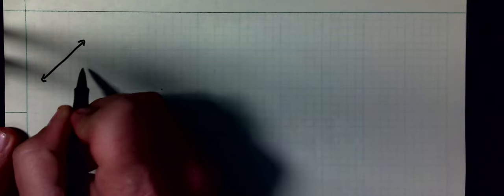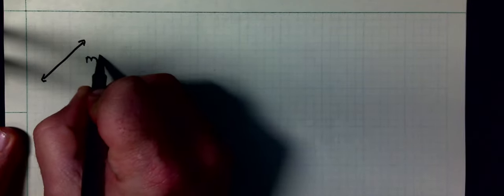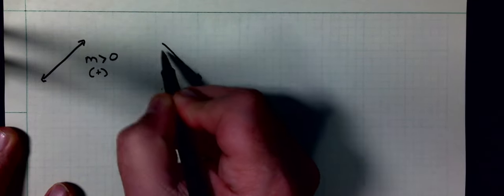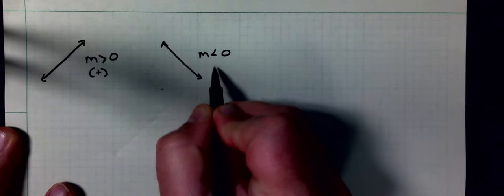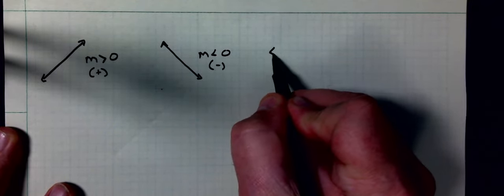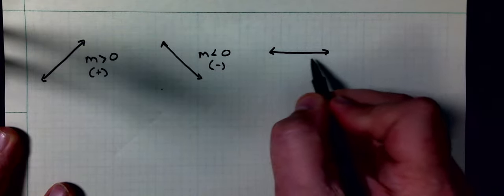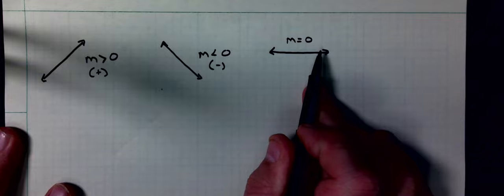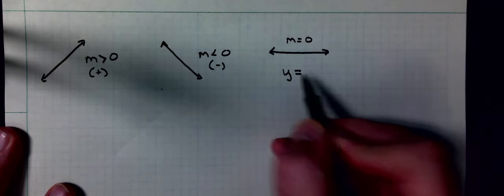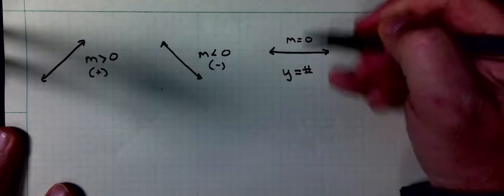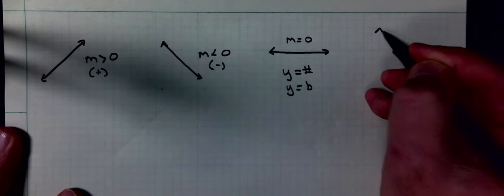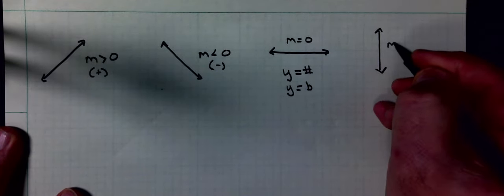I showed you this. If the line is going uphill, slope is positive. If going downhill, slope is negative. If the line is going horizontal, slope is 0. Equations of lines like this would be just y equals some number, whichever the y-intercept. In this case, it's y equals 2. Then if I have a vertical line, slope is undefined.